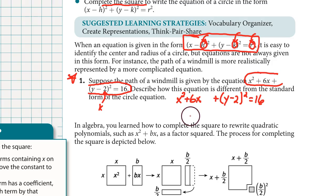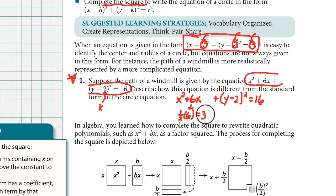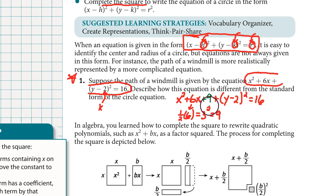Here's how completing the square works — you learned this in algebra class. Take half of the coefficient of the x term. Half of 6 is 3. Then square this number: 3 squared is 9. That 9 is the number we fill into the blank spot we left, so we write plus 9. If you add 9 to the left side of the equation, you must compensate by adding 9 to the right side as well.